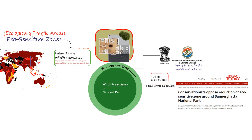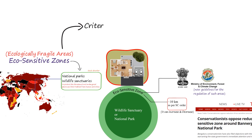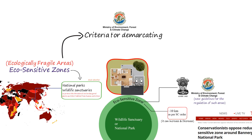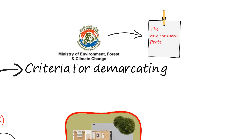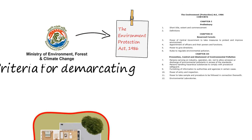Now that we know what an eco-sensitive zone is, it's time to understand what are the criteria for demarcating such areas — in other words, on what basis the government defines an area as an eco-sensitive zone. These eco-sensitive zones are notified by the Ministry of Environment, Forests and Climate Change, which draws its power from the Environment Protection Act of 1986. When you go on to read this act, there is no mentioning of the word eco-sensitive zones.